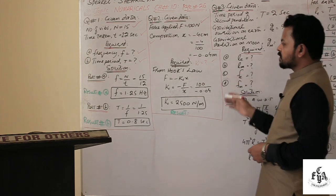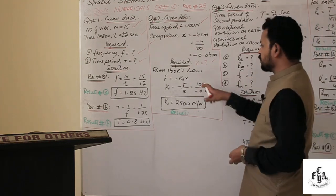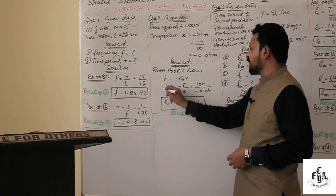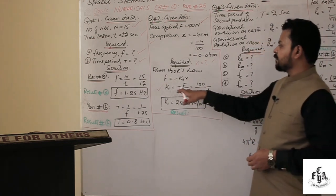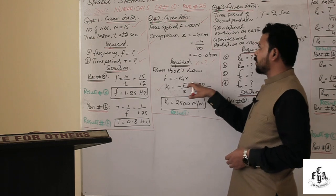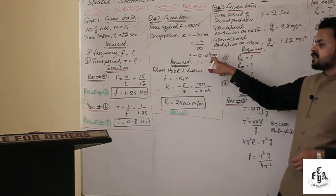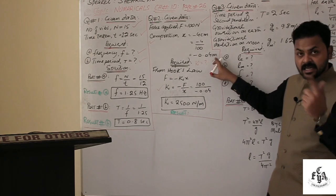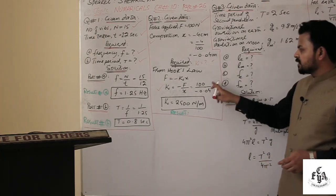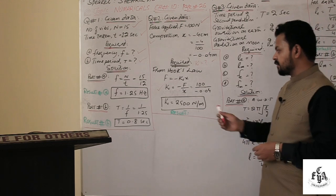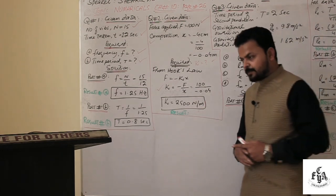From Hooke's law, F = −kx. Dividing both sides by x gives k = −F/x. Substituting F = 100 N and x = −0.04 m, we get k = 2500 newton per meter. That is the value of the spring constant.